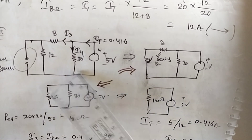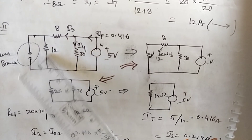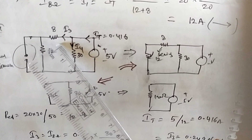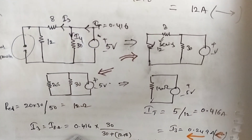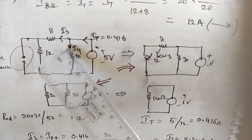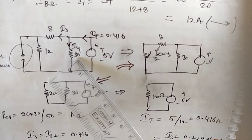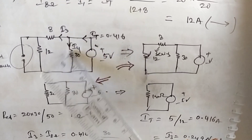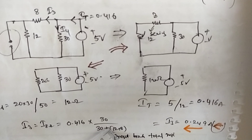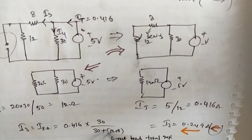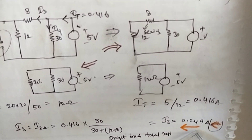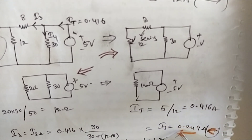The total current is I = V/R = 5 volts / 12 ohms = 0.416 amps. Now calculating i3, the current through the 8 ohm resistance using the current division rule: i3 = total current × opposite branch resistance (30 ohm) / (30 + 8 + 12) = 0.416 × 30 / 50 = 0.249 amps. The direction of this current is opposite — left-hand side — compared to i1.